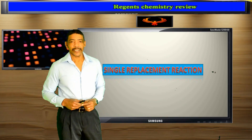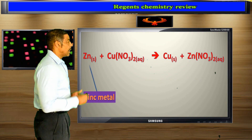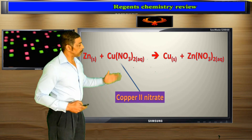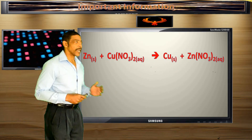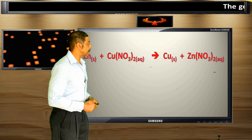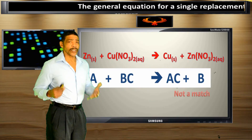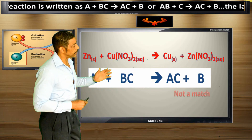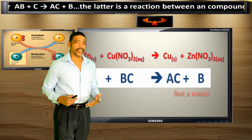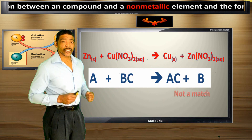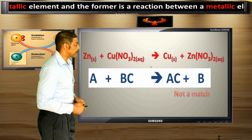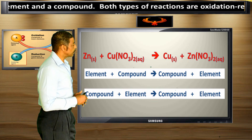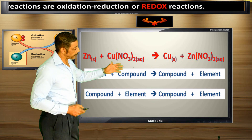A single replacement reaction is another type of redox reaction. A single replacement reaction occurs when an element reacts with a compound. Consider the reaction between zinc metal and aqueous copper nitrate. The general equation for a single replacement reaction is A plus BC yields AC plus B. However, as you can see from this actual equation, the general equation does not necessarily have to be followed. So it's better to remember that a single replacement reaction occurs when an element reacts with a compound.